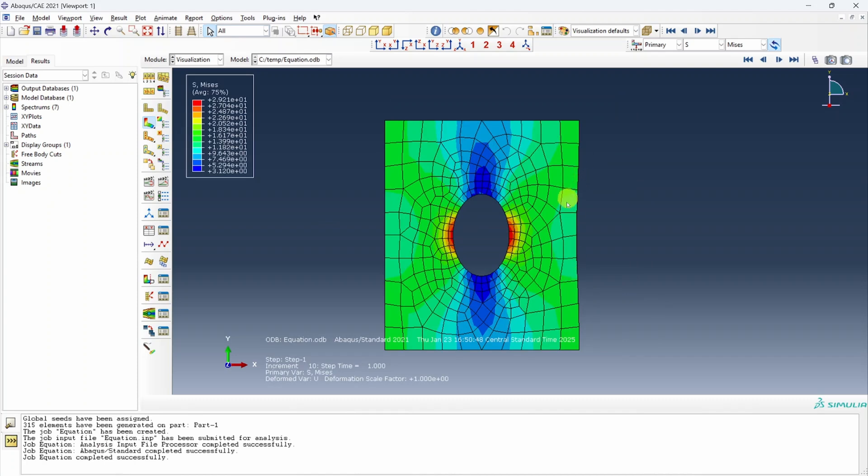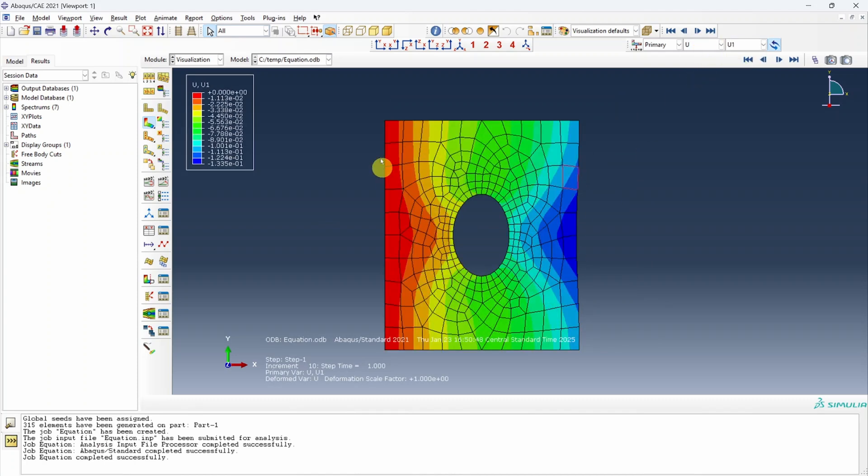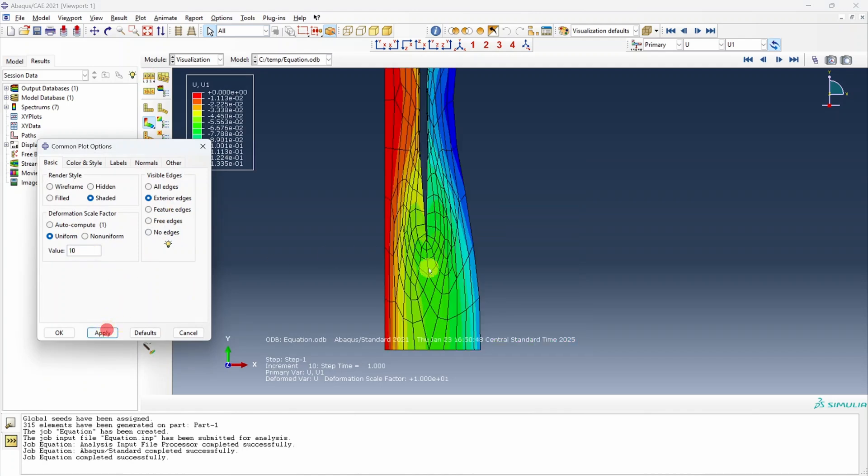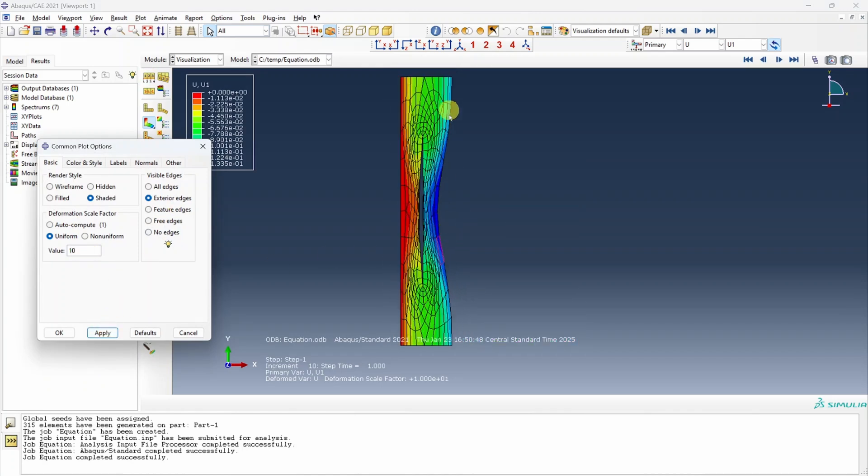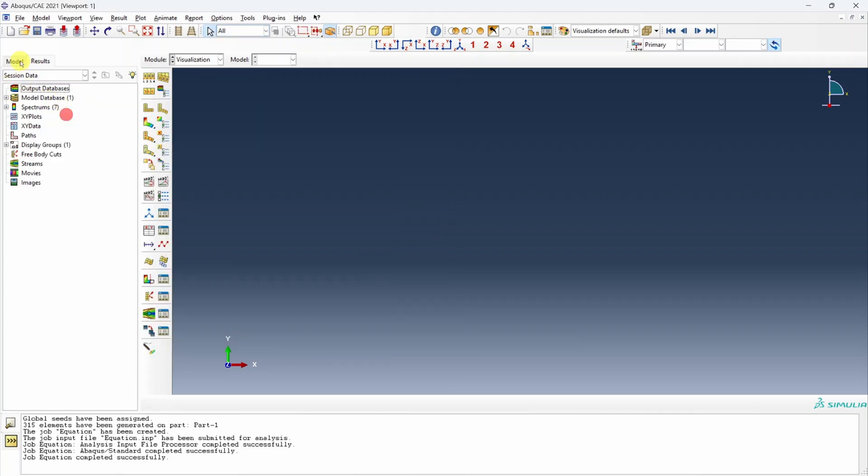Let's see the results. We can see a little bit dip over here. If I change this to u1, we can see the contours on left and right side are not matching. Maybe we can exaggerate this by increasing this deformation scale factor to 10. And now you can see a clear dip over here.